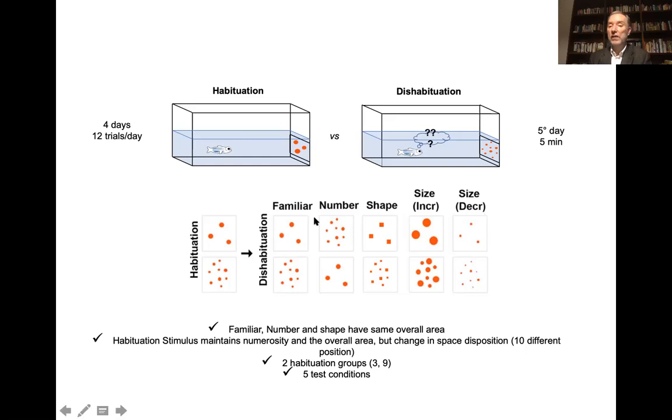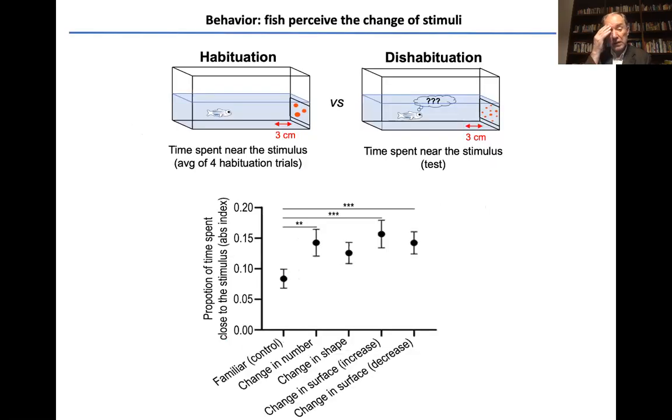And then on day six they were tested with a novel stimulant for dishabituation. And the dishabituation could be either a change in number or in shape or in size, either an increase or a decrease in size, or a control group in which there was no change. Fish responded quite well to change. You can see here time spent close to the stimulus which increased as a result of dishabituation for all changes.